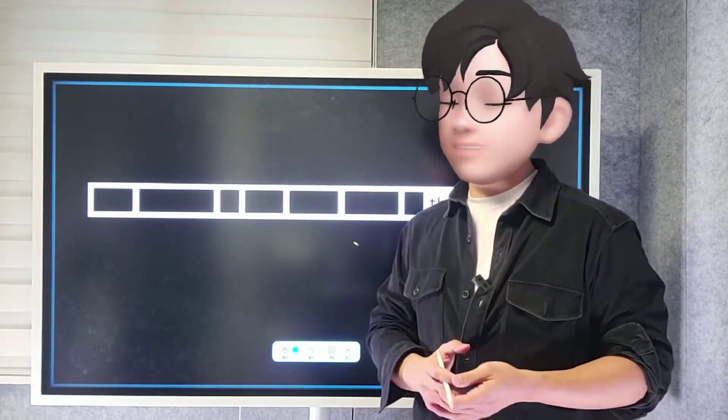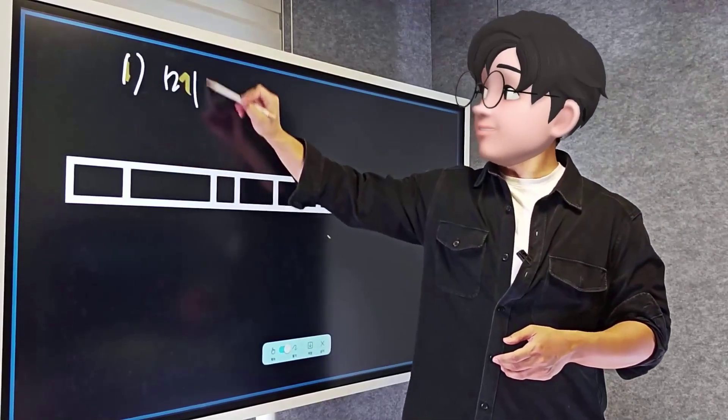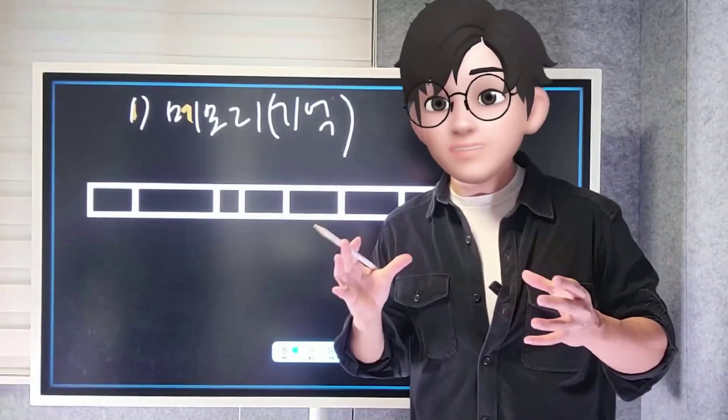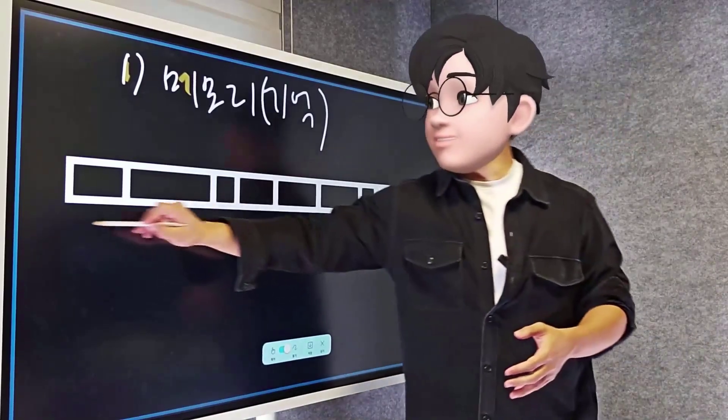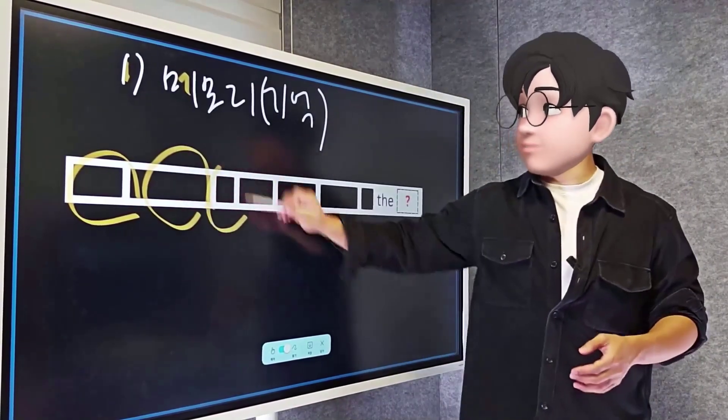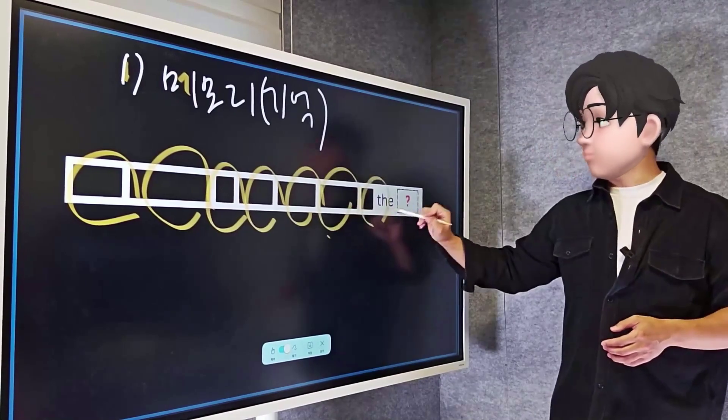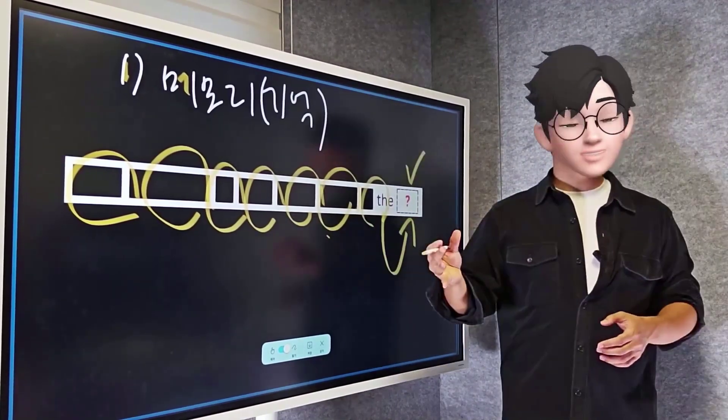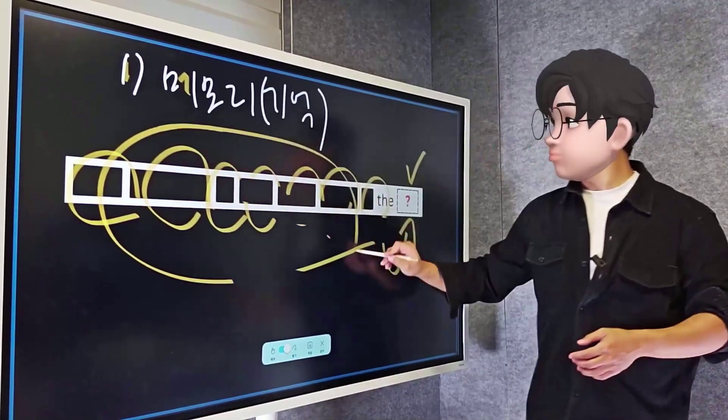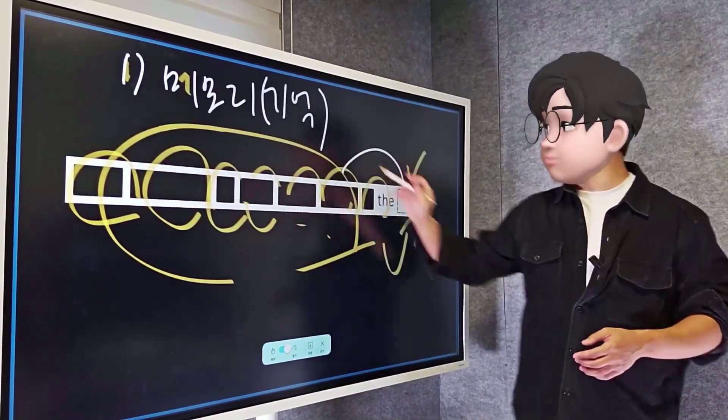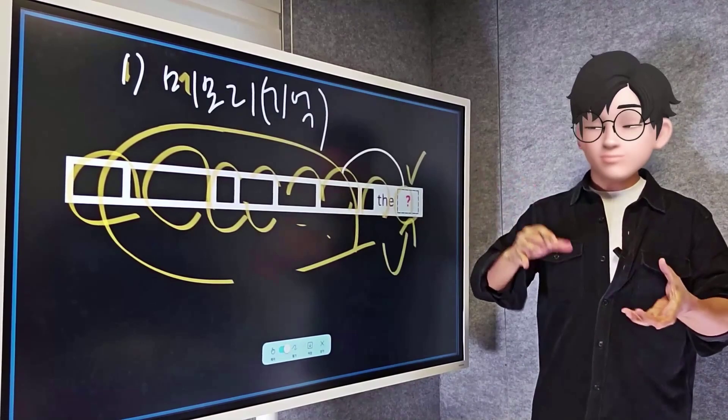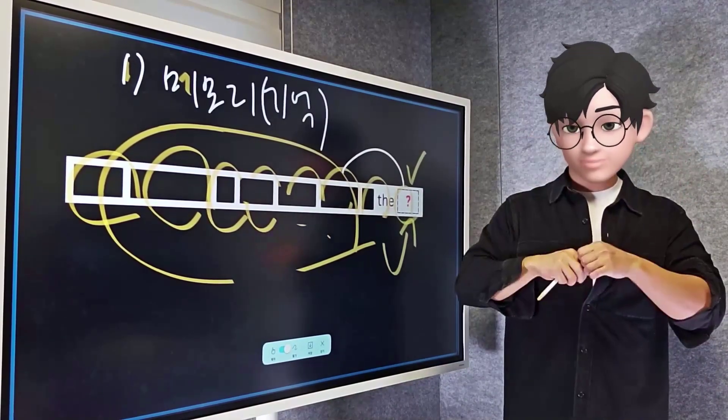The first significant issue to consider is related to memory, specifically the limitations of our memory capacity. In the Transformer model, the fundamental process involves predicting which word will come next in the sequence, based on the sequence of words that have already appeared. Therefore, each time we produce a new output, we need to completely clear the memory, run the process once, and then perform the calculations again to obtain another result.